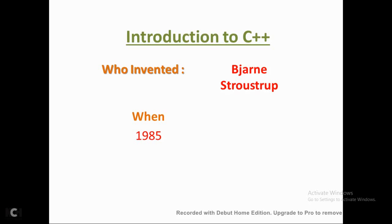Stroustrup found the need for a different language that had some modifications, betterments, and enhancements over C language. From 1979 they started, until 1985 they proposed this language, and it came into the proper picture around 1997-98. The important thing to remember: invented by Bjarne Stroustrup, development started in 1979, proposed in 1985, at AT&T Bell Labs, USA. These are the basic things you should know — who invented it, when, and where.